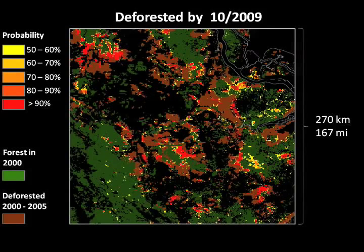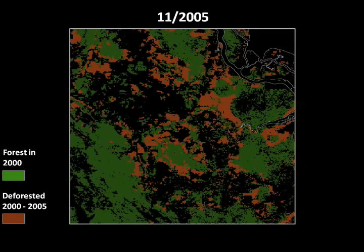This allows us to examine the efficacy of forest management practices by showing the geographic frontier of deforestation and how it responds to conservation efforts. The following animation shows where and when forest destruction occurs each month from the end of 2005 to October 2009. Remember, yellow to red pixels represent lower to higher probability of deforestation.